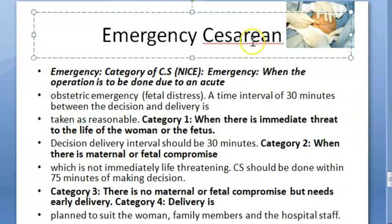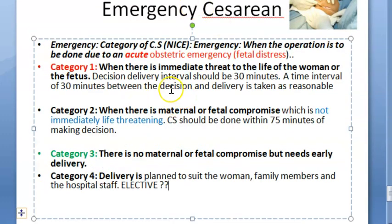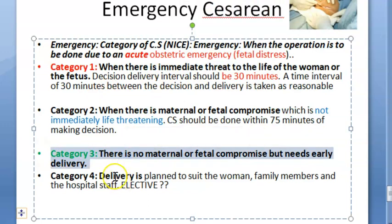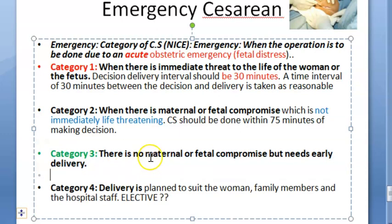Emergency caesarean has three main categories — one, two, and three (there are actually four). Category one is an acute obstetric emergency with immediate threat to the life of the woman or fetus — you must deliver within 30 minutes, marked in red. Category two is not immediately life-threatening — you can take about 75 minutes. Category three needs early delivery but there is no maternal or fetal compromise. Category four is more like an elective.